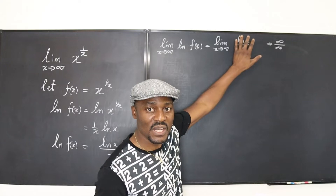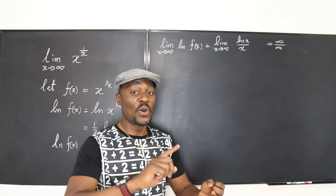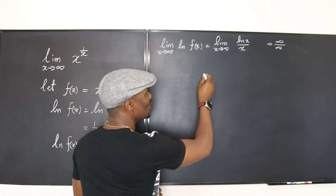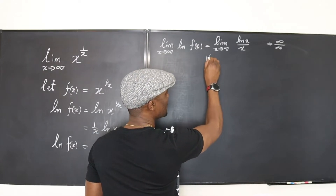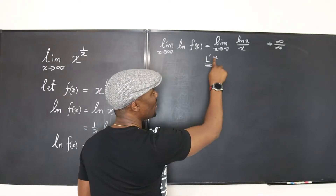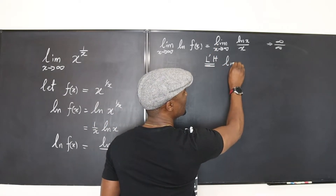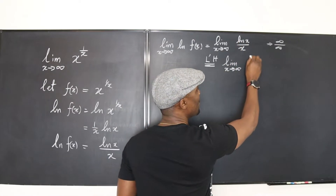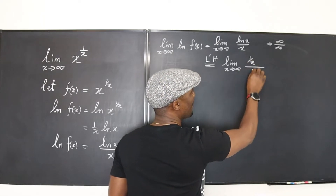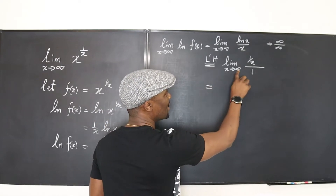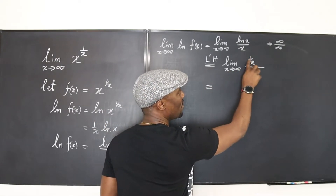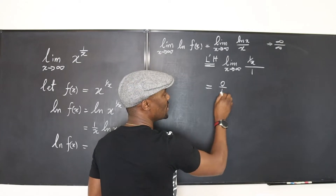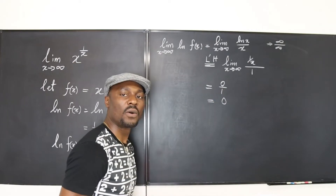When you have 0 over 0 or infinity over infinity, apply L'Hôpital's rule. Applying L'Hôpital's rule, this equals the limit as x goes to infinity of: differentiating the top gives 1 over x, differentiating the bottom gives 1. As x goes to infinity, 1 over x becomes 0 and the bottom is 1, so we get 0 over 1, which equals 0.